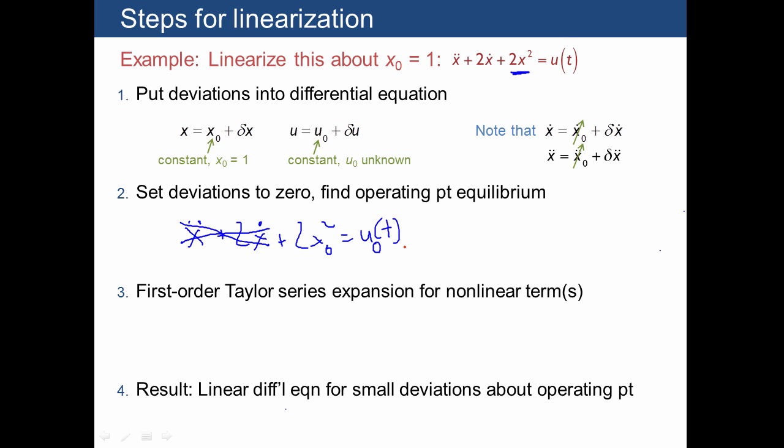And so now we have an operating point equilibrium. It says that u₀ has to be equal to 2x₀² in order for our system to be at equilibrium. And if you recall that we were linearizing about x₀ equals 1, that means that we're just going to have u₀ is equal to 2.